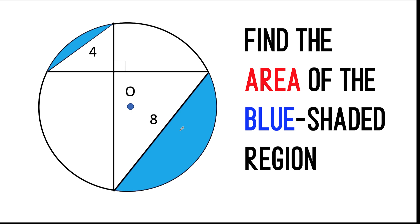Hi everyone, here is our math problem for today. We are given here a circle with two blue shaded regions, and we would like to find what is the combined area of these blue shaded regions.